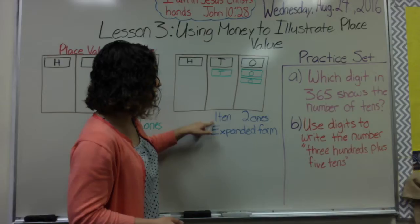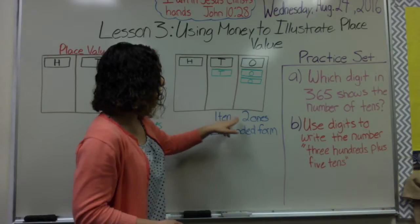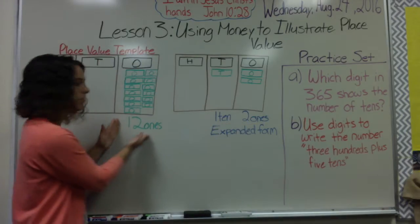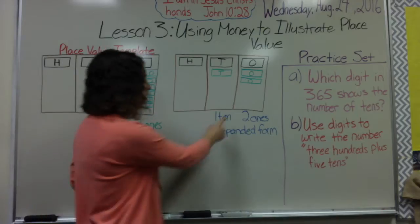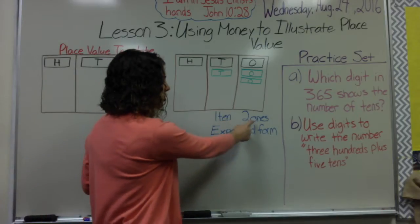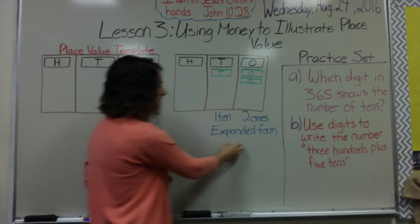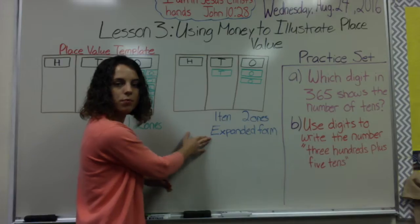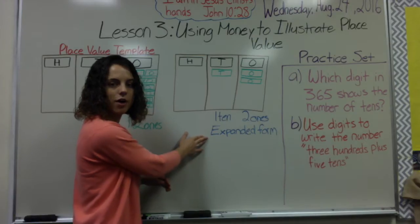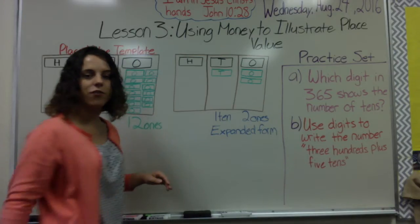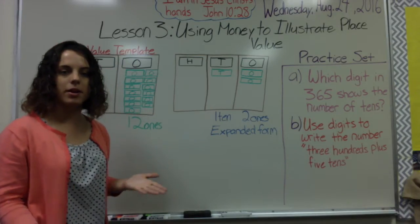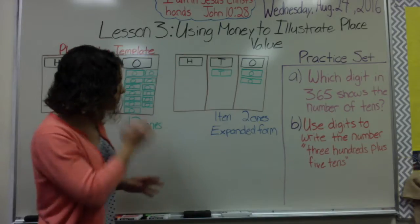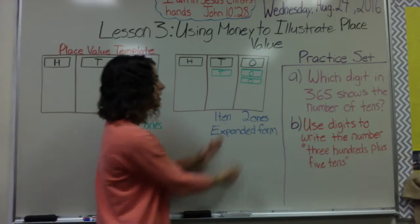I write it as one ten plus two ones, which is still the same thing as twelve. One ten plus two ones is actually written in expanded form — this is how I would write the number twelve in expanded form. Expanded form should have been a concept you learned in fourth grade.